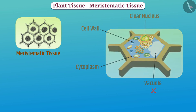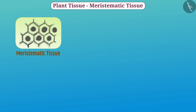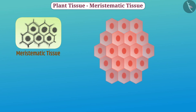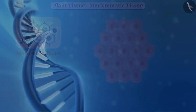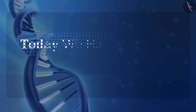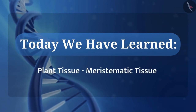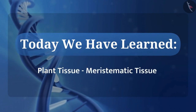The new cells formed from meristem are initially similar to the meristem, but as they grow and mature, their properties gradually change, and they divide as components of other tissues and work with other tissues. So today we have learned about plant tissue, meristematic tissue.